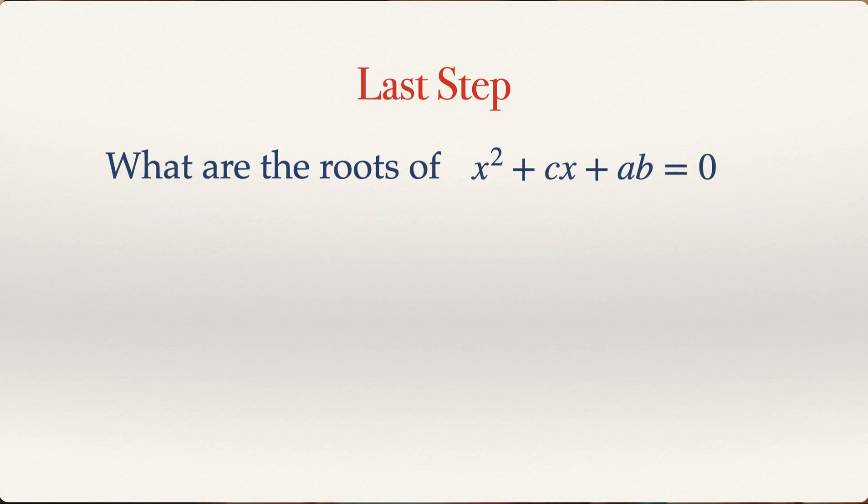So what are the roots of x squared plus cx plus ab equal to zero? That is the question. We already know the values of x1, x2 and x3. In fact, we know that a is equal to x1 and b is equal to x3. So ab is equal to x1 times x3. Now, if we can just show that x1 plus x3 is equal to minus c, we will be able to say that x1 and x3 are the roots of this particular equation.